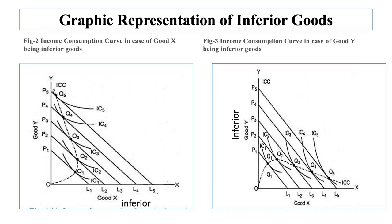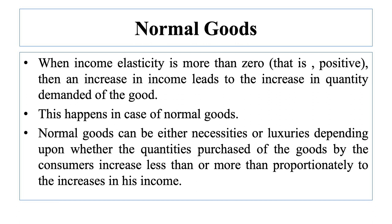Now we will study the income consumption curve in case of normal goods. Normal goods can be either necessities or luxuries, depending on whether the quantity purchased by the consumer increases less than or more than proportionately to the increase in his income. If the quantity purchased of a commodity increases less than in proportion to the increase in income, then the commodity is known as a necessity. On the other hand, if the quantity purchased increases more than proportionately to the increase in income, it is called a luxury.